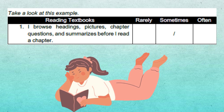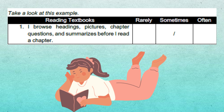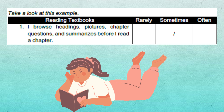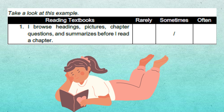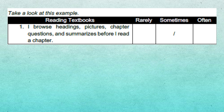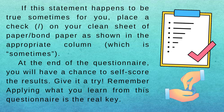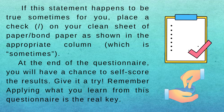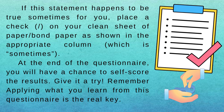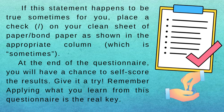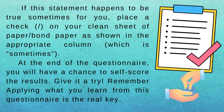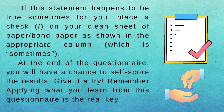Take a look at this example. Reading Textbooks: Rarely / Sometimes / Often. Item 1: I browse headings, pictures, chapter questions, and summaries before I read a chapter. If this statement happens to be true sometimes for you, place a check on your clean sheet of paper or bond paper in the appropriate column, which is Sometimes. At the end of the questionnaire, you will have a chance to self-score the results. Give it a try.